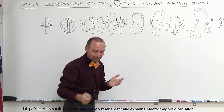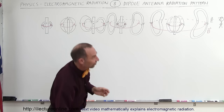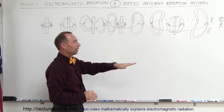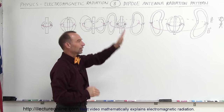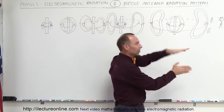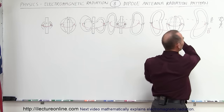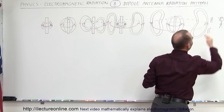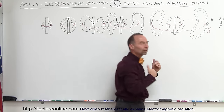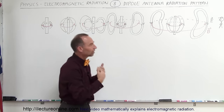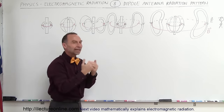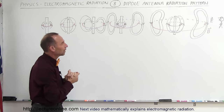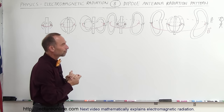The observer sees the electric field oscillating in one direction and the magnetic field oscillating perpendicular to it, with a constant wave passing by — disturbances in both the electric and magnetic fields — known as electromagnetic radiation.